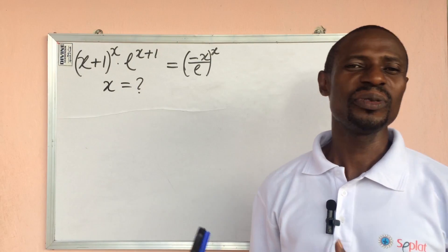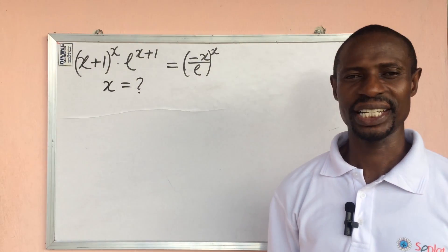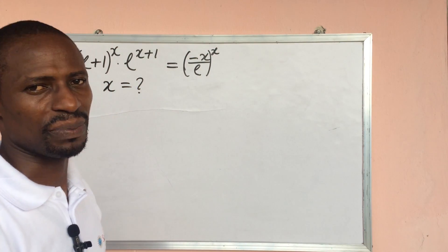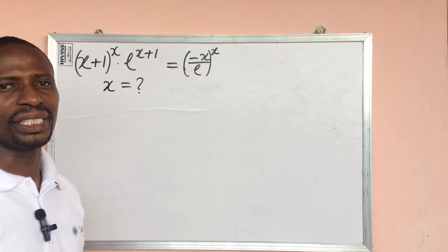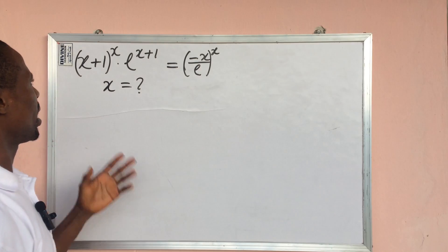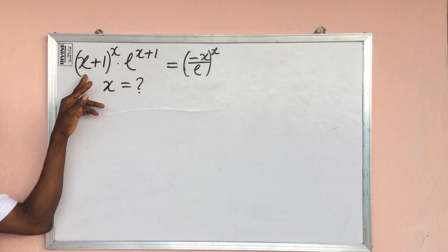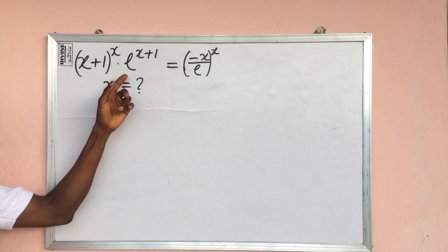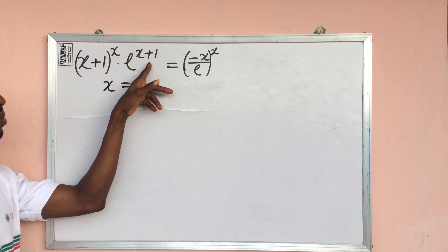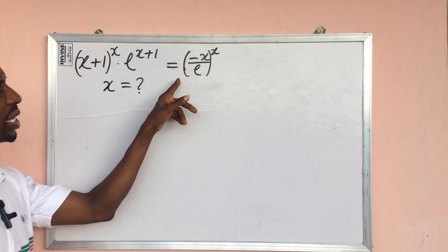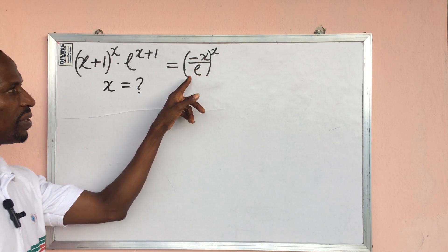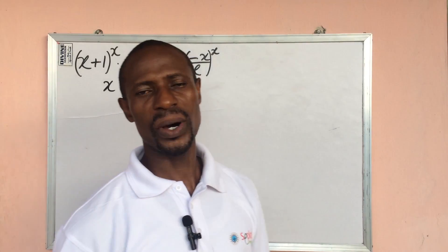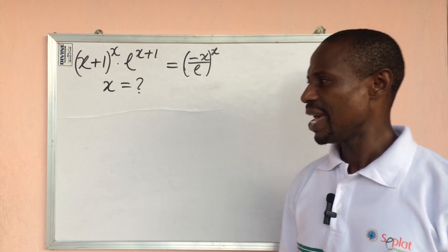Welcome everyone to my channel. Today we have a challenging exponential equation on the board — how to solve exponential equations having variable exponents. The question reads: bracket open x plus 1 close bracket to the power of x, times e to the power of x plus 1, equal to bracket open minus x all over e close bracket to the power of x. What will be the possible value of x?